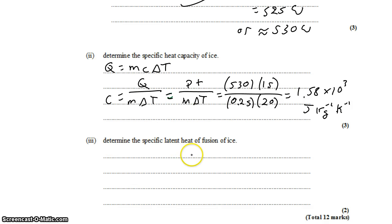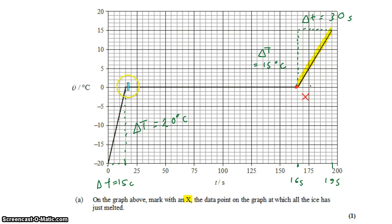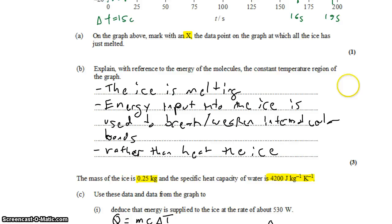Last question, we want to determine the specific latent heat of fusion for the ice. So we're talking about changes of state now. We're now talking about this region of the graph. In this region of the graph, there's no change in temperature, but there certainly is a change in time. That's from 165 seconds over here to 15 seconds or 150 seconds. I have to input power at 150 or 530 watts for 150 seconds to melt all the ice.